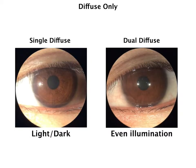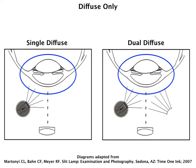For a lot of times when we're doing external photography, we just want a diffuse light with no slit beam on. There are two choices: a single diffuse light attached to the slit tower, or a dual diffuse light. One of the problems with a single diffuse light is that there's a very bright area and a very dark area of the photograph. Most of the time it's better to have even illumination to improve the overall quality of the photograph. Here's the diagram of the single diffuse and dual diffuse illumination.